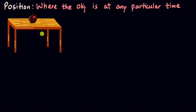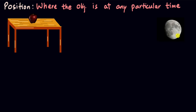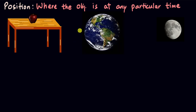For example, a fruit on a table remains on the table and we say that it is at rest. But if someone is watching this setup from the moon, then the whole earth is changing its position, and so the fruit and the table — everything is changing its position. The fruit is at rest if viewed from the room itself, from the very room that the table and the fruit is kept in. But it is moving if viewed from the moon.